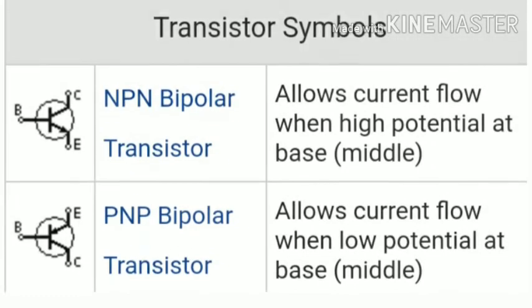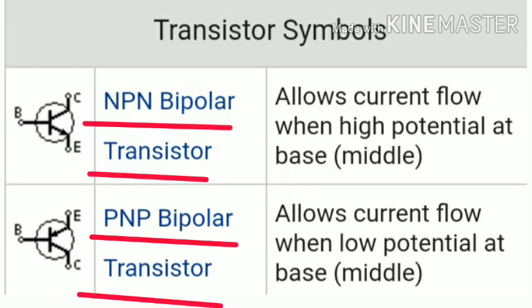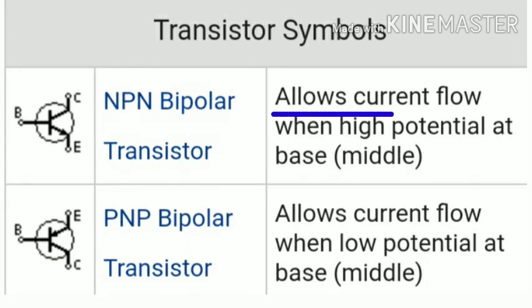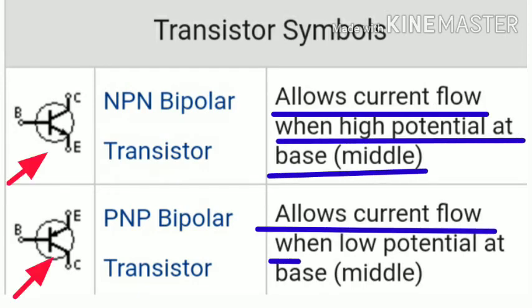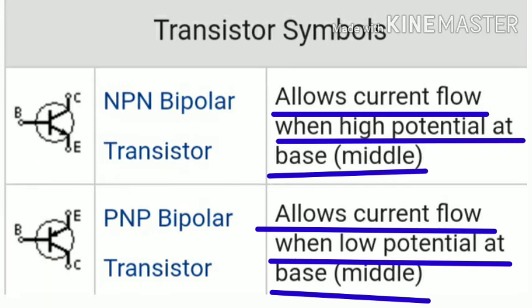The next symbol is the transistor — mainly the NPN and PNP bipolar transistors. In the NPN transistor, current flows toward the emitter side, allowing high potential at the base. In the PNP transistor, current enters the emitter side, allowing current flow when there is low potential at the base. Both types have three terminals: base, collector, and emitter.